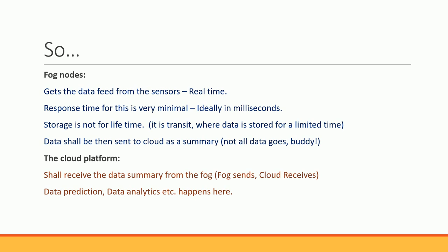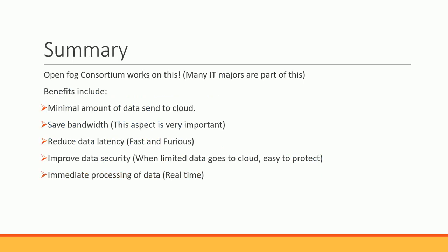Storage in fog is not for lifetime — it is in transit, meaning the data is stored only until it is processed in the fog. Data is then sent to the cloud as a summary — only what needs to go to the cloud for future analysis is pushed. The cloud receives all data sent by fog and handles data prediction, data analytics, and big data processing.